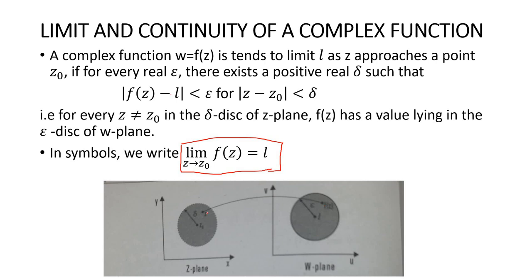For every z not equal to z0 in the delta disk of the z-plane, if modulus of z minus z0 is less than delta, then f(z) has a value l lying in the epsilon disk — that is, modulus of f(z) minus l is less than epsilon. Therefore, as z approaches z0, f(z) approaches the limit l, and we write: limit as z tends to z0 of f(z) equals l.